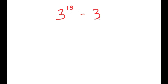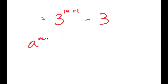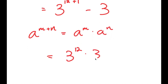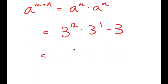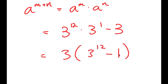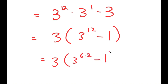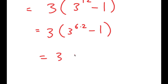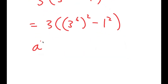In this problem, I solve 3 to the power of 13 minus 3. I rewrite this as 3 to the power of 12 plus 1 minus 3, then use the property a to the power of m plus n equals a to the power of m times a to the power of n, giving 3 to the power of 12 times 3 to the power of 1 minus 3. Factoring out 3 gives 3 times 3 to the power of 12 minus 1. Rewriting 3 to the power of 12 as 3 to the power of 6 squared, I can apply a squared minus b squared equals a plus b times a minus b.